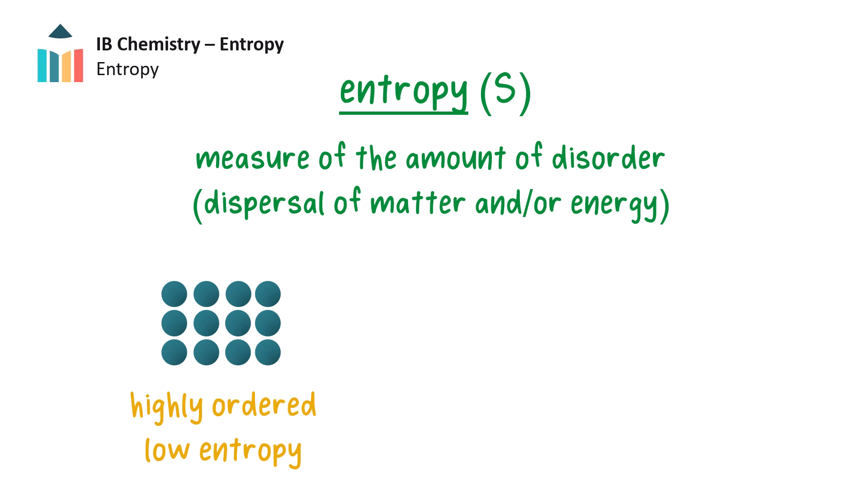An ordered system, in other words a system with little disorder, has a low entropy, while a system with more disorder of matter or more possibilities for how the energy is distributed has a higher entropy.